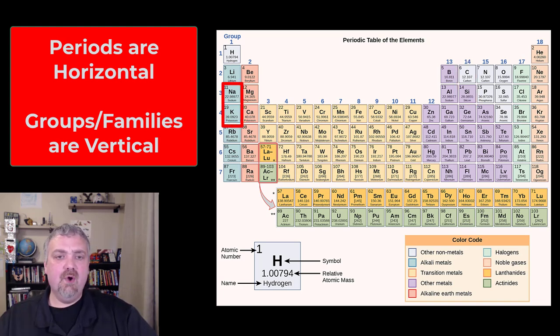Over on the left-hand side, sodium and potassium there. Sodium chloride is table salt. Potassium chloride is Mrs. Dash. It's a salt alternative because they have very similar properties. Another one, you see calcium and magnesium, very close together. Their absorption is linked together. So a lot of calcium could decrease absorption of magnesium and vice versa.